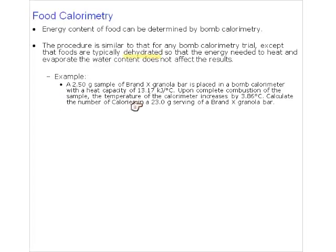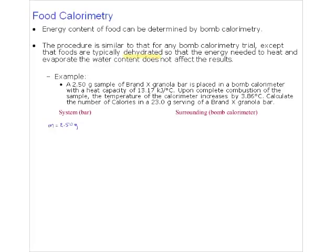We want to calculate the number of calories in a 23-gram bar. We only burned a 2.5-gram sample, not the entire bar, so any heat energy we get is from that sample only. We'll have to calculate the fuel value first, then scale up to the entire bar. What do we know about the bar? We know 2.5 grams were burned. What do we know about the bomb calorimeter? We know its heat capacity is 13.17 kJ/°C and the temperature change was 0.386°C.